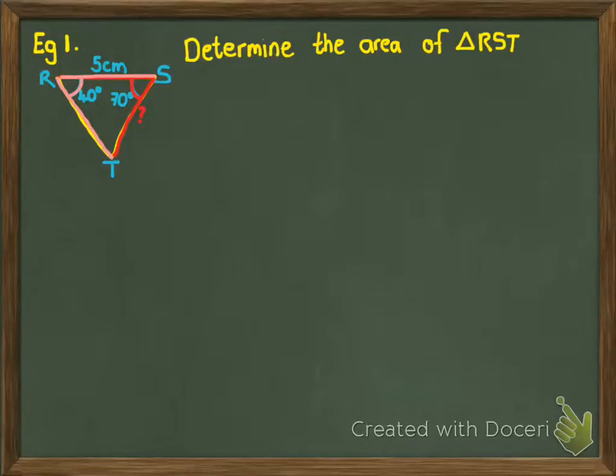Now the only problem is I don't know ST and I don't know RT. Which means either one of those sides I have to first find before I can find the area. Now you'll notice that the 5cm is opposite angle T. Because I'm immediately starting to think sine rule. Now the problem is I don't know angle T. So if I wanted to use the sine rule I'd need to know angle T. But don't forget, as soon as you have two angles in a triangle you can work out the third.